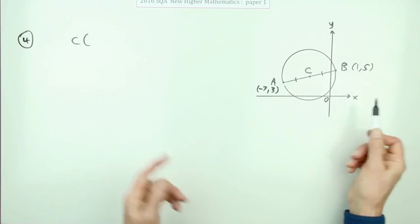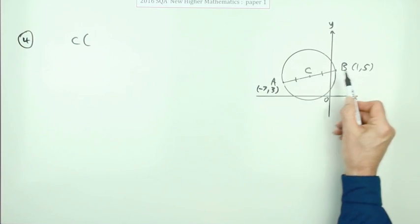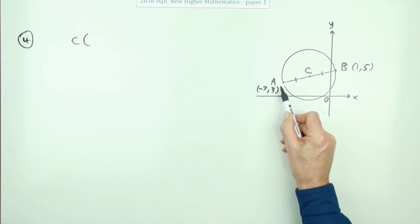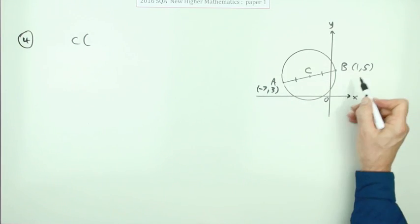Maybe negative seven and one, it's not quite so obvious immediately what's halfway between them. You could say they're eight apart. So go halfway, which means go four forward from there or four back from there. But put down the conventional working.